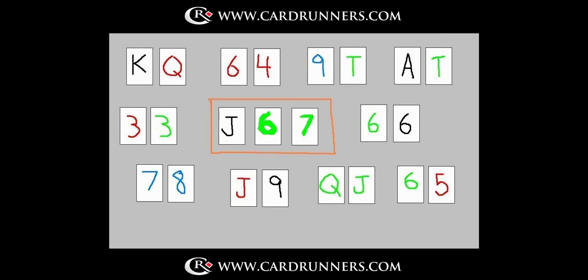On Jack-6-7 two-tone, once again we don't really get that many folds. Ace-10 now folds because it's just one over card. Pocket threes folds because there's three over cards to the board. And then everything else pretty much stays. Maybe they'd fold King-Queen, but not entirely. There's backdoor straight draws and two over cards. It's going to be hard for someone to convince themselves to fold. 6-4 suited is at least bottom pair. 9-10 offsuit is a gutshot. Pocket sixes is a set. 7-8 is middle pair. Jack-9 is top pair. Queen-Jack is top pair. And 6-5 offsuit is bottom pair.